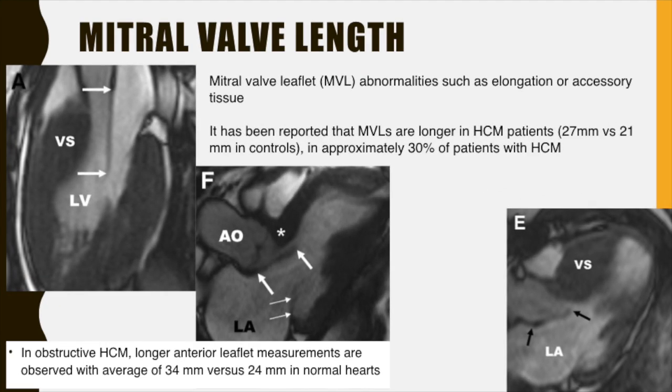Abnormalities are also common in the mitral valve and the subvalvular apparatus in patients with HCM. It has been reported that the mitral valve leaflet lengths are longer in HCM patients as compared to normal. Image A is of an elderly man with an extraordinarily long anterior mitral leaflet measuring 33 mm. The posterior mitral leaflet is of normal length. Image F is of a 57-year-old man who had preclinical HCM, had a genetic mutation, but a normal LV wall thickness of 9 mm, and on careful examination a greatly elongated anterior mitral leaflet of 25 mm. It is not a rule that mitral valve would always be elongated in HCM — here is an example of a 31-year-old woman showing massive septum hypertrophy but a normal anterior mitral leaflet length.